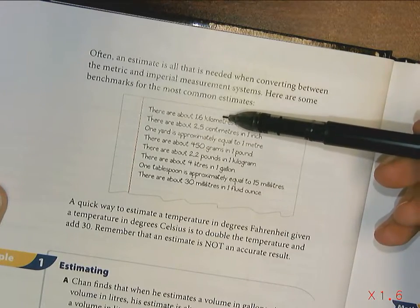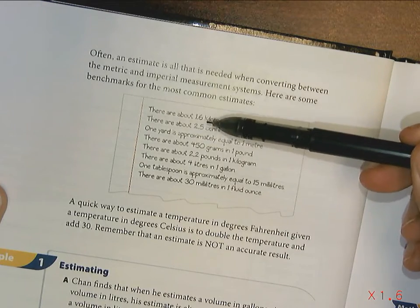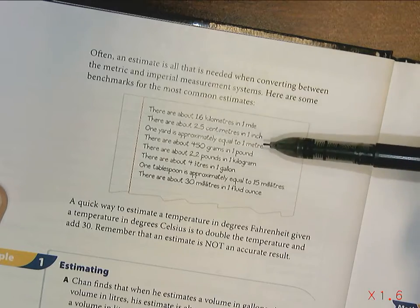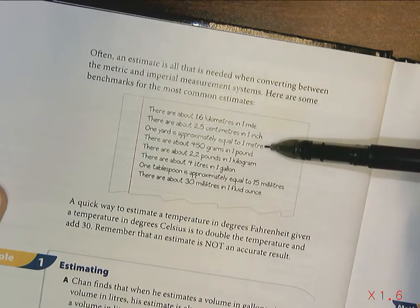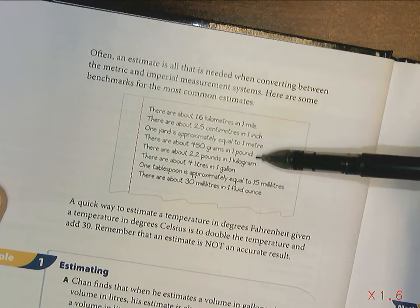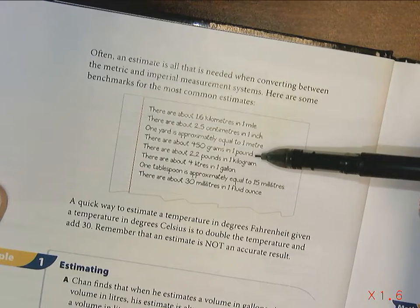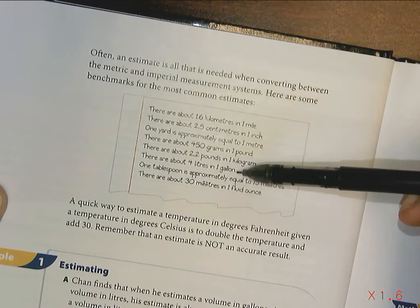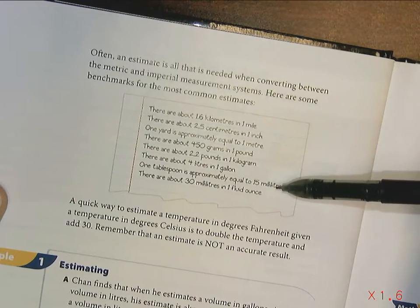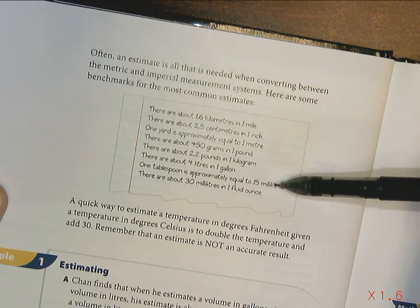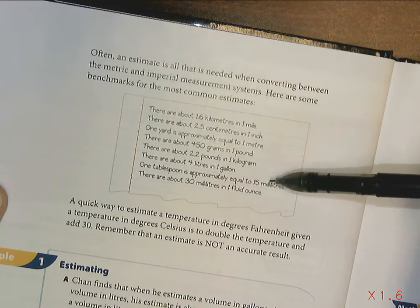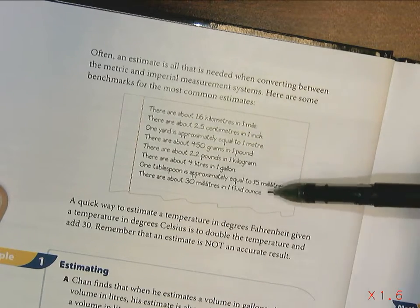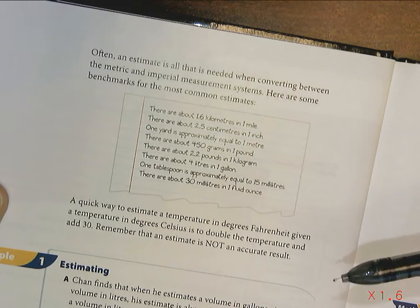A yard is pretty close to a meter, there's 450 grams in a pound, there's about 2.2 pounds in a kilogram, there's four liters in a gallon, one tablespoon is approximately equal to 15 milliliters, and there's 30 milliliters in one fluid ounce.